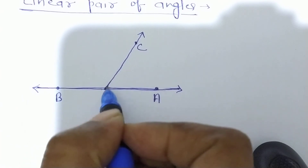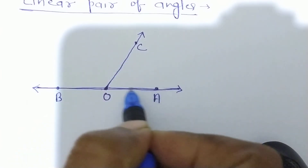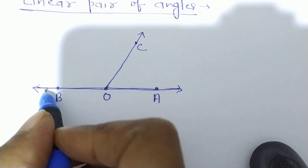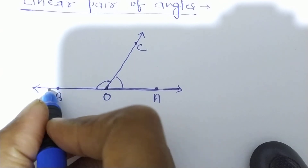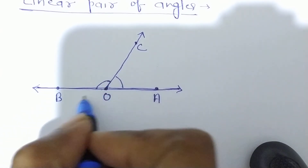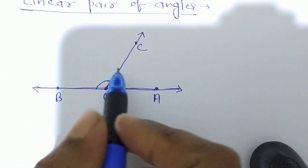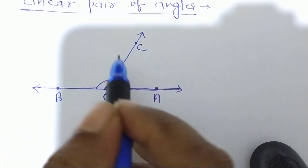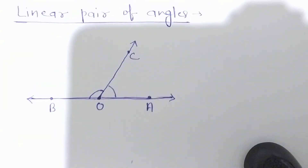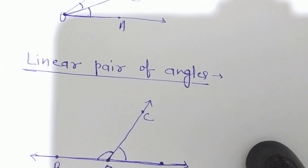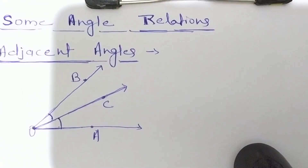In this figure, OA and OB are two opposite rays, and angles AOC and BOC are adjacent angles — both rays are on opposite sides. Therefore, angle AOC and angle BOC form a linear pair of angles. So today we have seen some angle relations: the relations that can exist between two angles — they can be adjacent angles, and they can be linear pair of angles. That's all for today. Thank you.